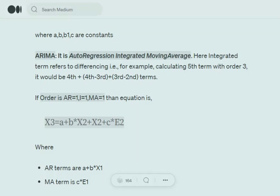So what is the integrated term? Giving you an example of the integrated term, assume that we are calculating the fifth term and the order for i equals to 3. So the terms that we would be adding in the equation would be 4th term plus 4th minus 3rd term plus 3rd minus 2nd term.